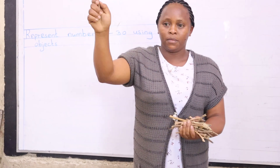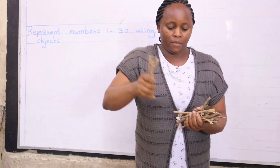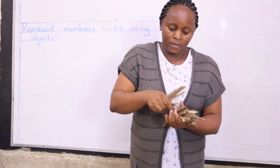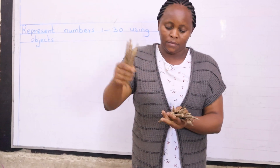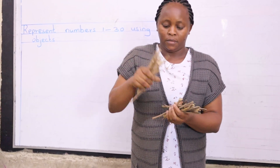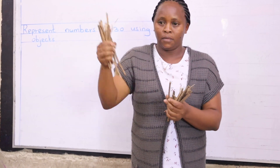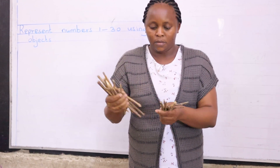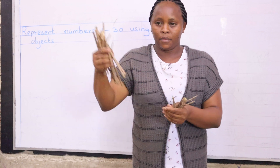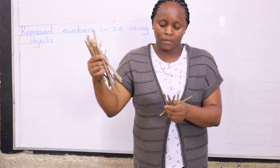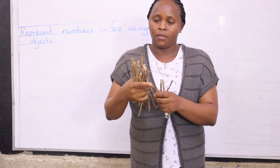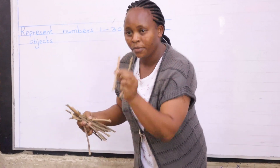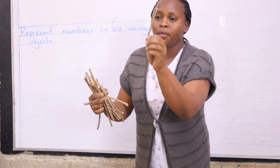Jason counts: two, three, four, five, six, seven, eight, nine, ten, eleven, twelve, thirteen, fourteen, fifteen, sixteen, seventeen, eighteen, nineteen, twenty, twenty-one, twenty-two, twenty-three, twenty-four, twenty-five, twenty-six, twenty-seven, twenty-eight, twenty-nine. Good.